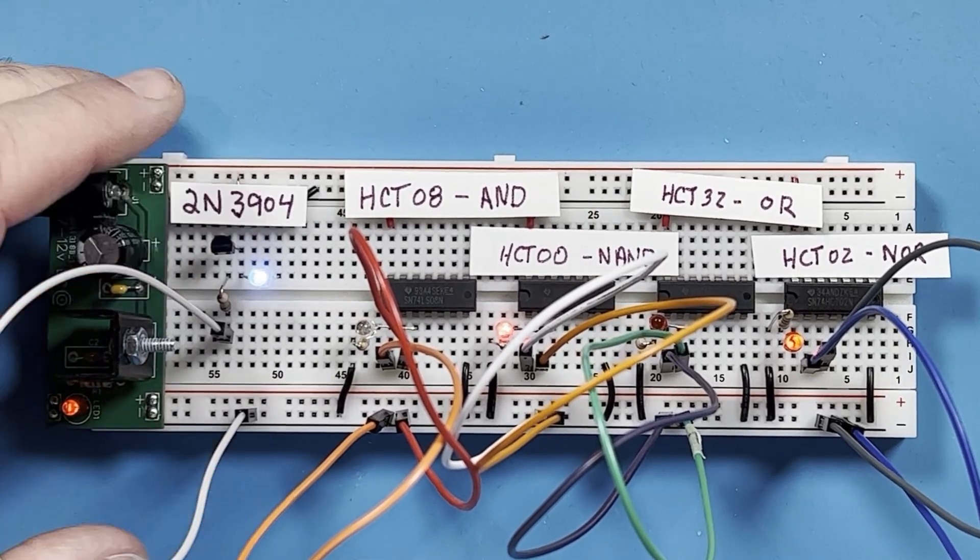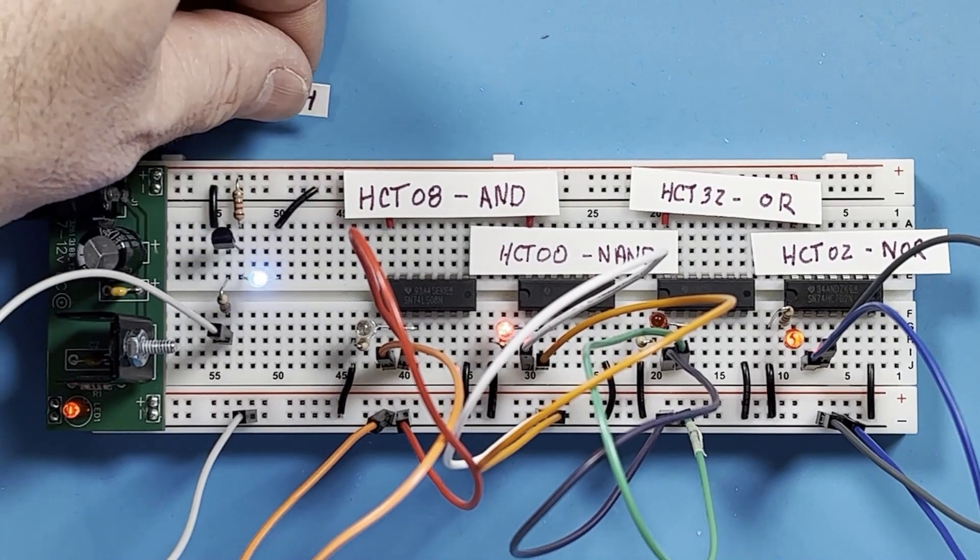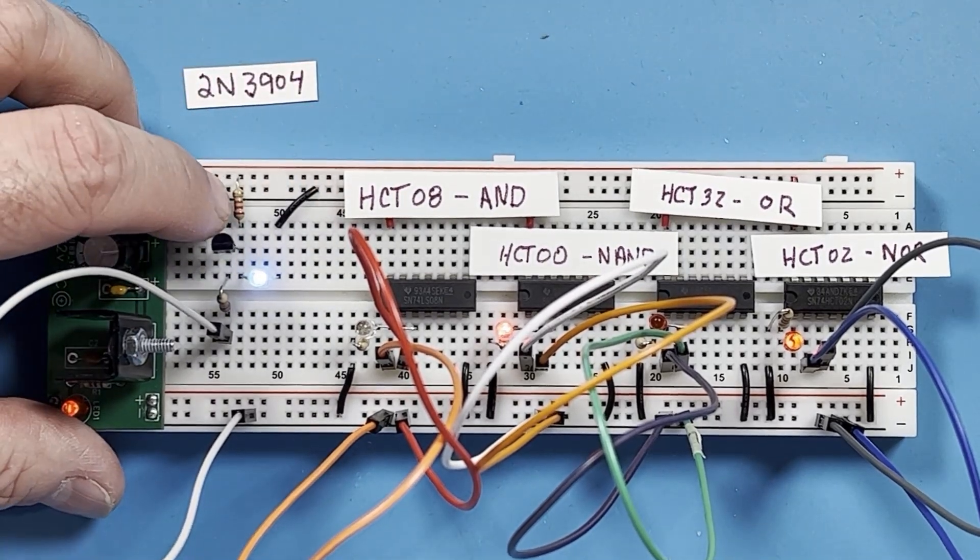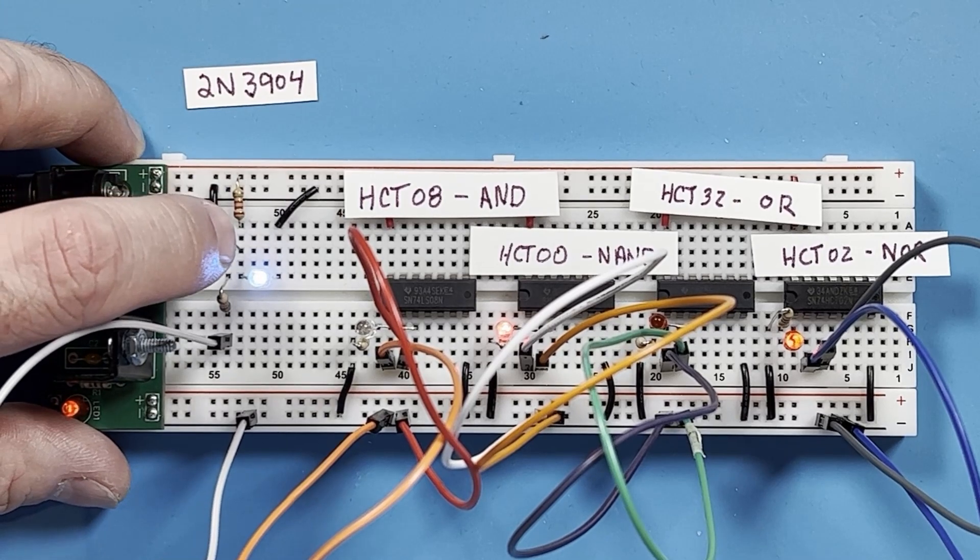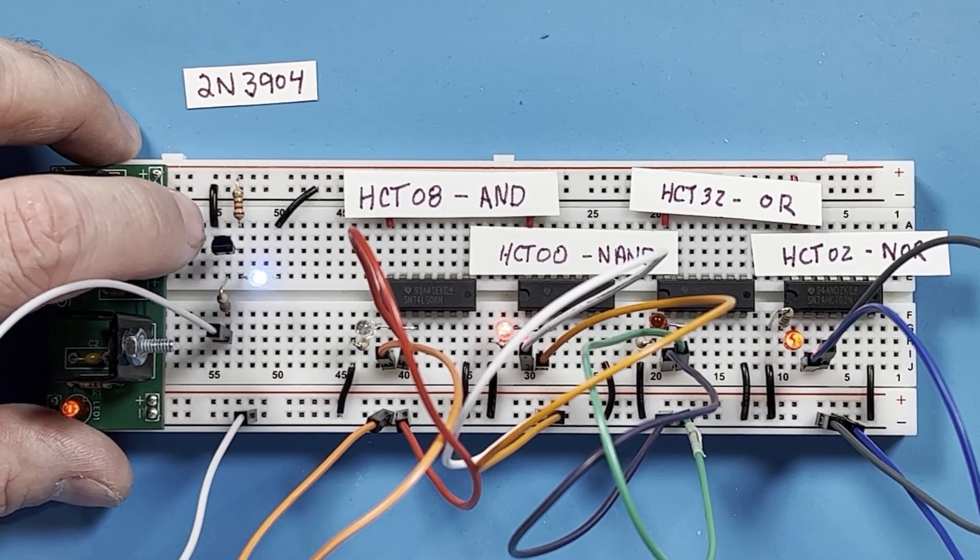I've hooked a resistor from 5 volts to the collector, and then connected the emitter directly to ground.